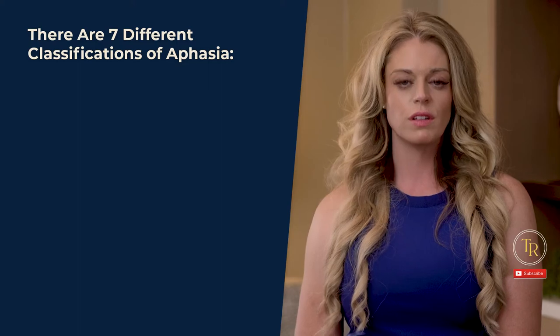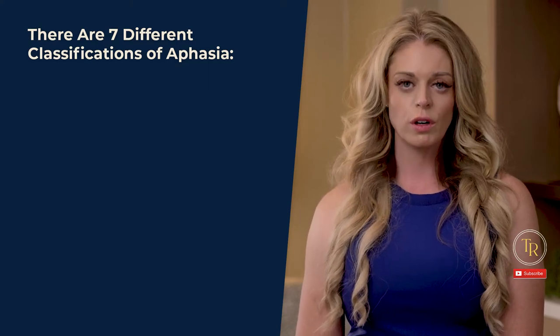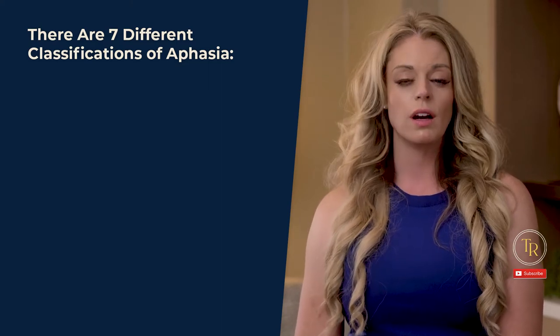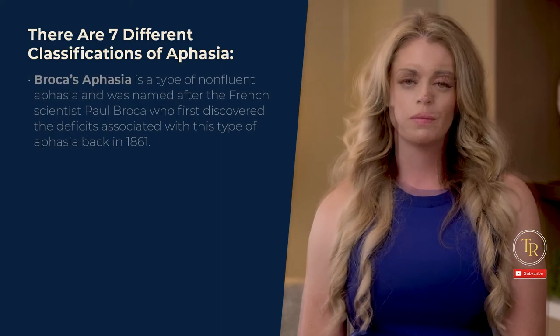Aphasia is usually grouped into two main categories of fluent and non-fluent aphasia, but today we're going to go a little more in-depth about each type. There are seven different classifications — four fluent and three non-fluent — of aphasia.